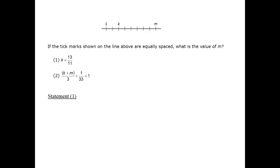Statement 1 gives us the value of k, which is 1 plus 2 tick marks. Therefore the statement tells us that a tick mark equals 1 over 11. Algebraically, we could express this by solving 1 plus 2t equals 13 elevenths, where t is the distance from one tick to the next.